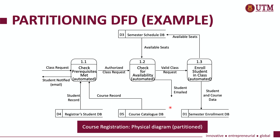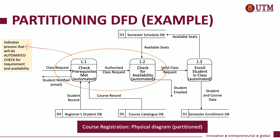Another example of partitioning is in this child diagram for a course registration system. As you can see, this is a physical diagram. The three processes — Process 1.1, Process 1.2, and Process 1.3 — are used to enroll a student into a certain course. We can partition Process 1.1 and Process 1.2 together, as both indicate they perform automated checking for requirements and availability.